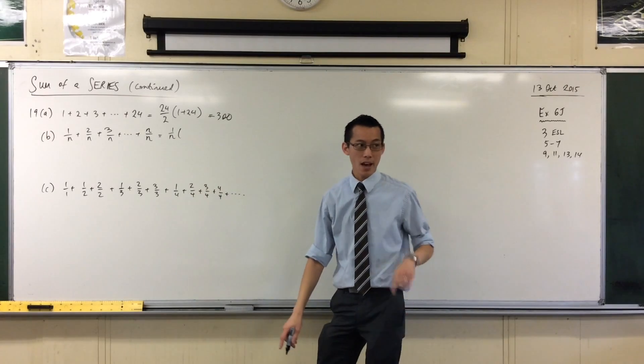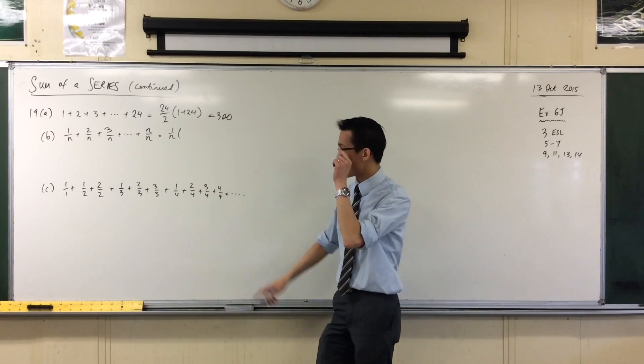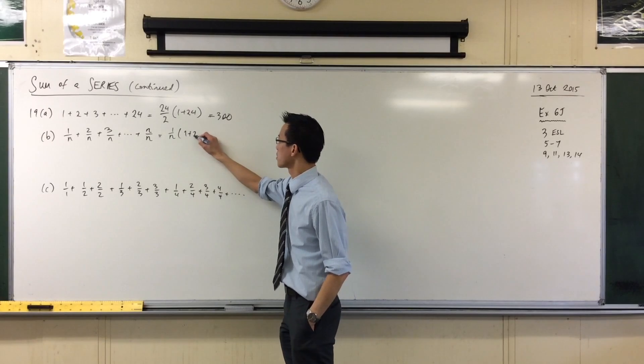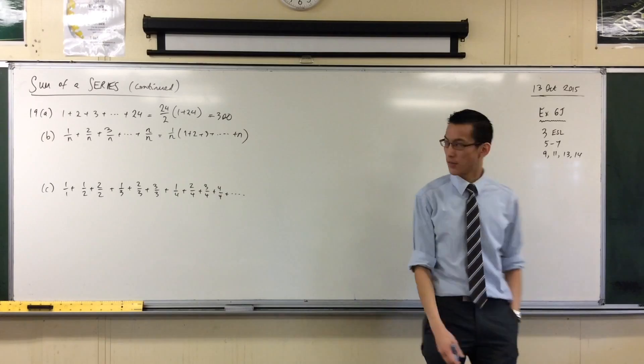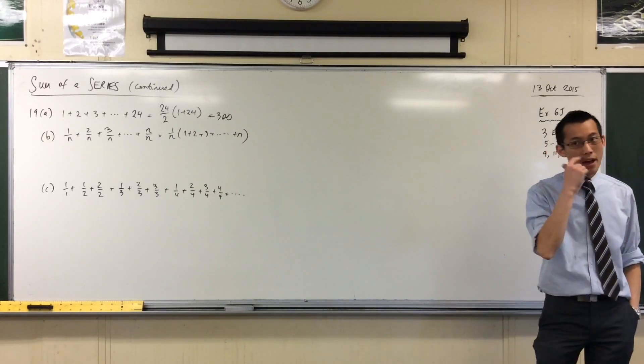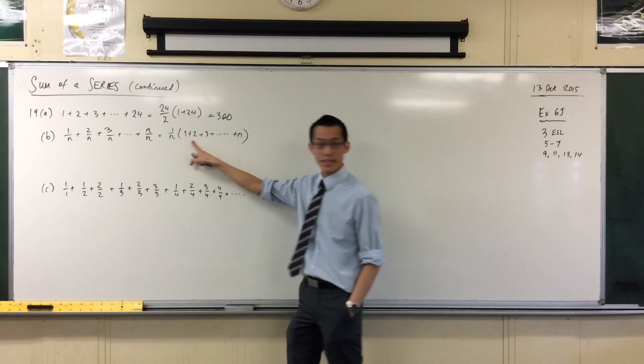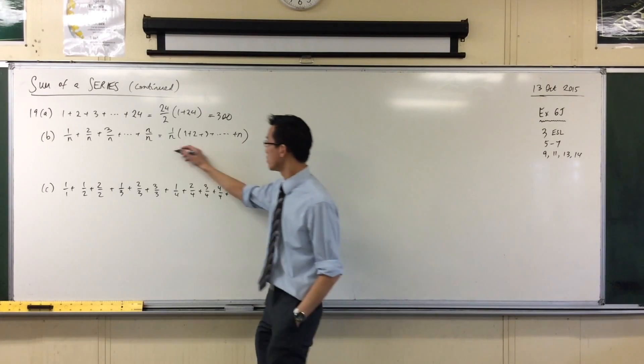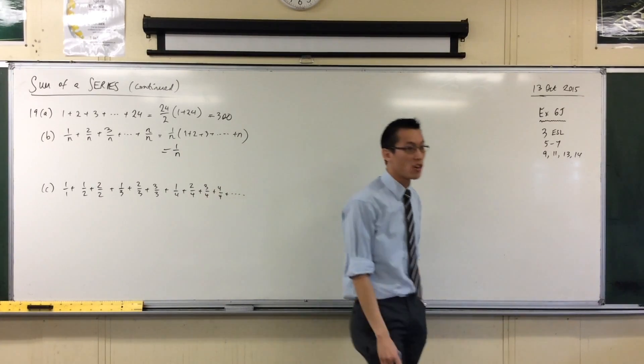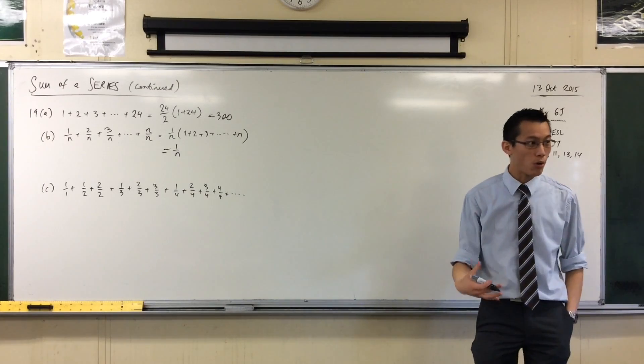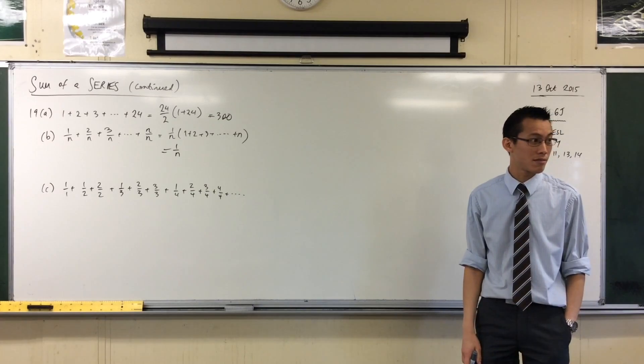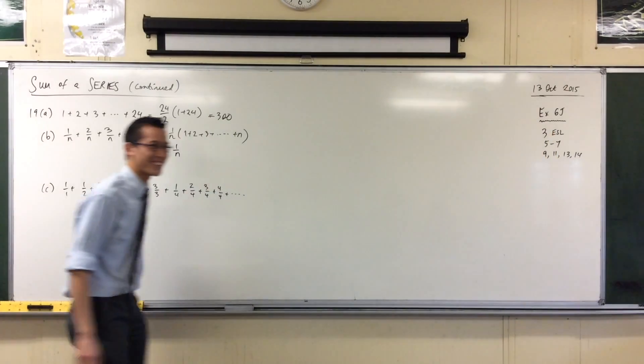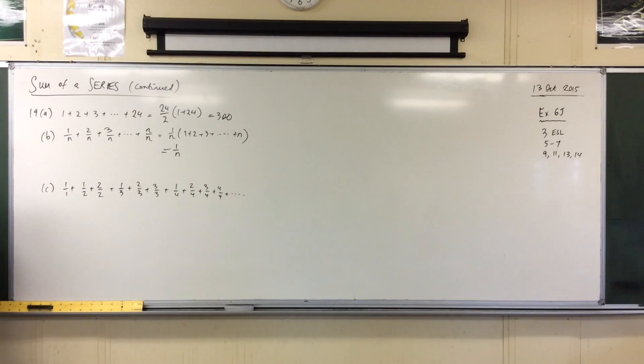So what I'm going to get left with is an AP very similar to the one I had in part A, right? So I'm going to get 1 plus 2 plus 3 plus all the way up until M. So that's the only difference. It's an indeterminate length. Okay, now here's the wonderful thing, right? This is an AP that I know really well. I can use my N on 2 A plus L form to work out the sum of this AP. Do you agree with that?